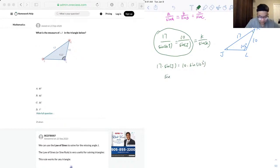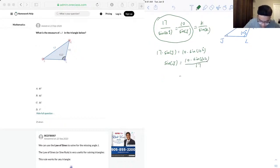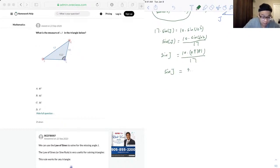So we move 17 to the right hand side, we'll get sine J is equal to 10 times sine 102 over 17. And sine 102 is 0.9781 and over 17. So we have our sine J, and this is equal to 0.57538.